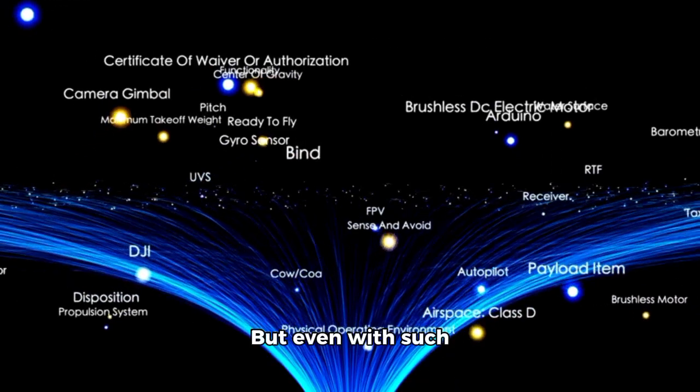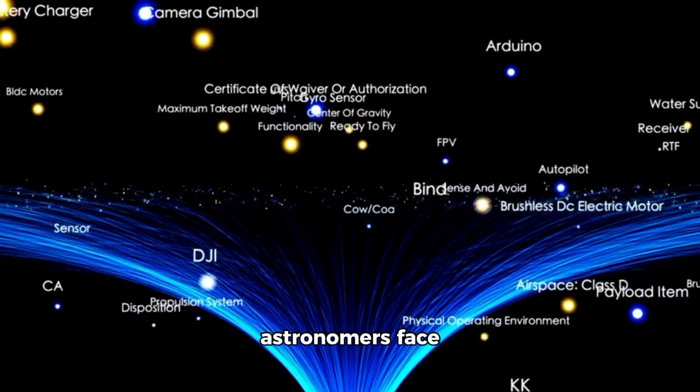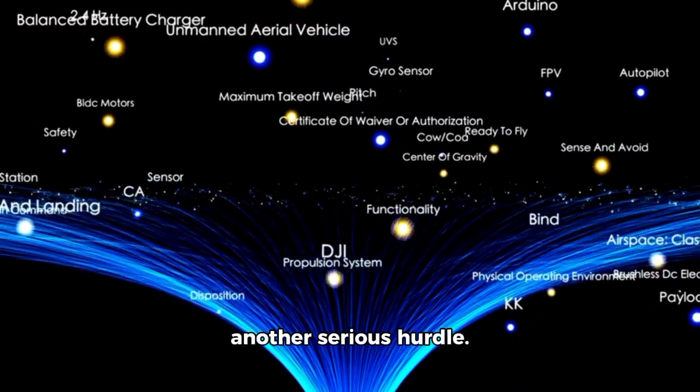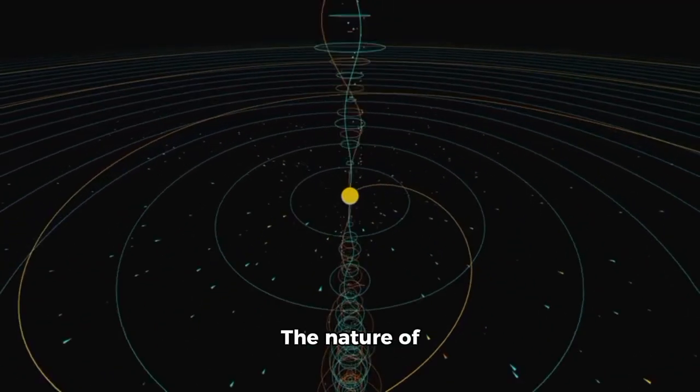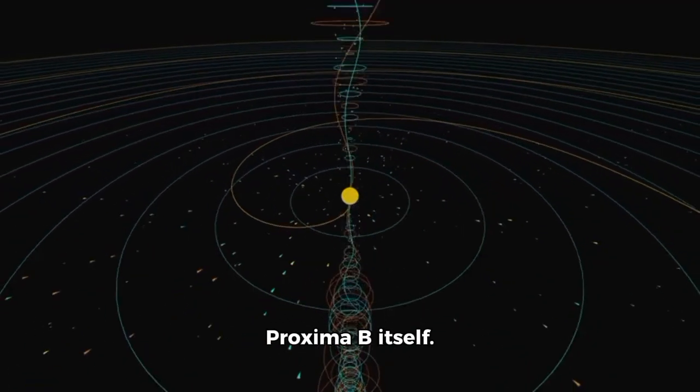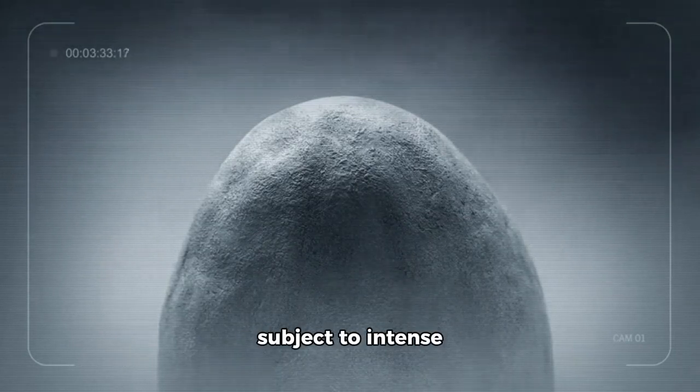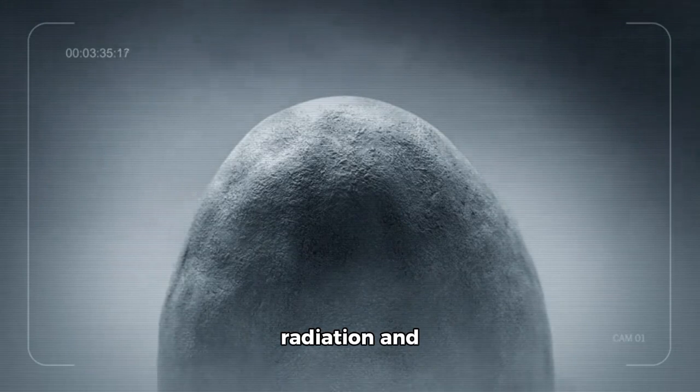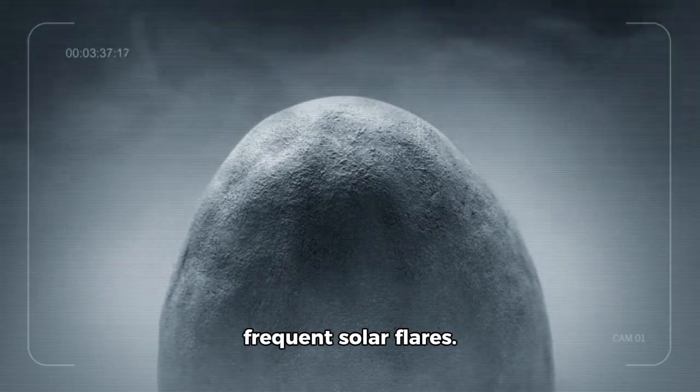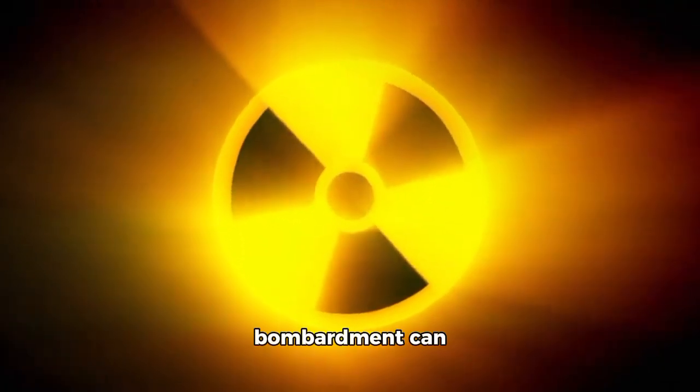But even with such advanced technology, astronomers face another serious hurdle: the nature of Proxima B itself. The planet's proximity to Proxima Centauri means it's subject to intense radiation and frequent solar flares.